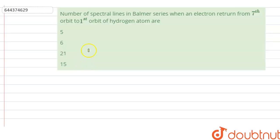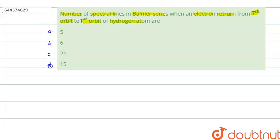The question says: the number of spectral lines in the Balmer series when an electron returns from the seventh orbit to the first orbit of a hydrogen atom. Options are: A) 5, B) 6, C) 21, and D) 15. We have to tell the number of spectral lines in the Balmer series when the electron returns from the seventh orbit to the first orbit.